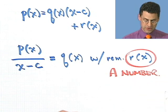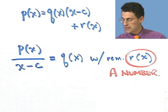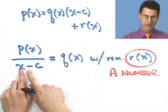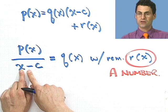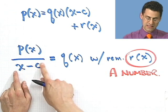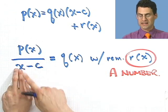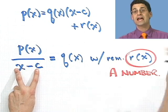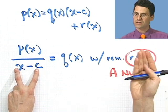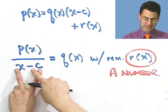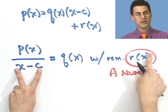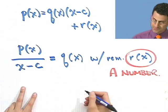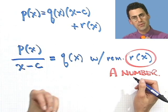Let me say that again. When you do long division, you keep dividing until the thing you have is actually smaller than the thing you're dividing by. And so since this is an x thing, I keep dividing through until I have no more x's left, and what remains is the remainder. Since I just have an x thing here, this remainder must be just a number — I don't know what the number is, but it's some number.